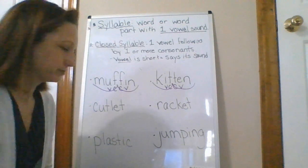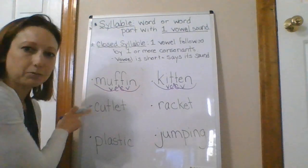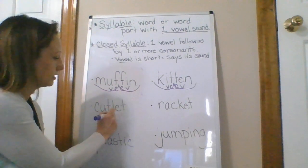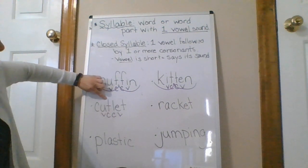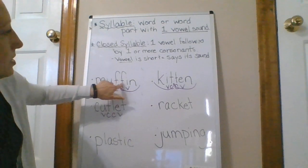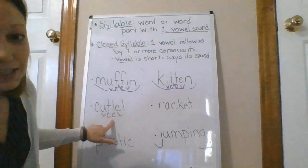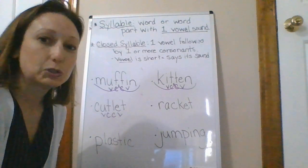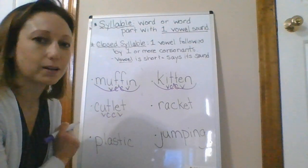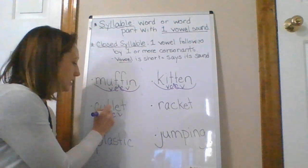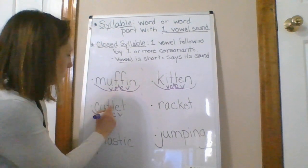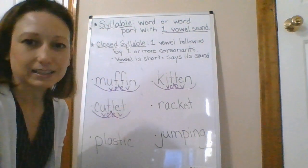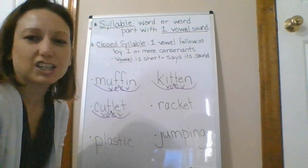A kitten is a baby cat. Moving to the next word — the U is my first vowel, then consonant, consonant, vowel. My consonants are T and L — two different consonants, but I still have two consonants. So my rule is: when two consonants come between two vowels, divide between the consonants. I divide between the T and the L, scoop it. My first syllable is 'cut,' my second syllable is 'let' — cutlet, like a chicken cutlet.